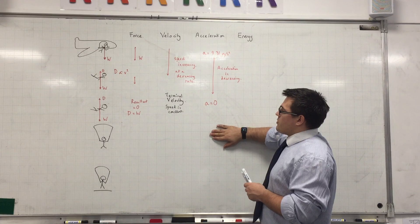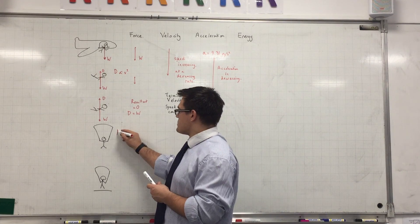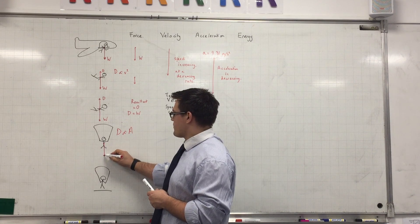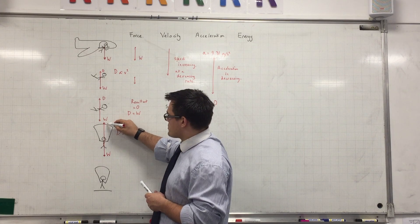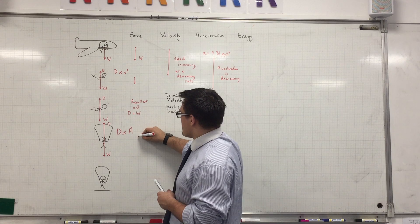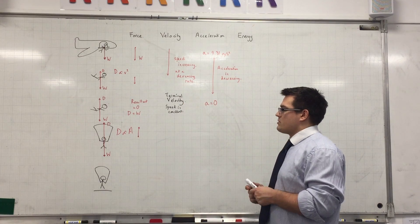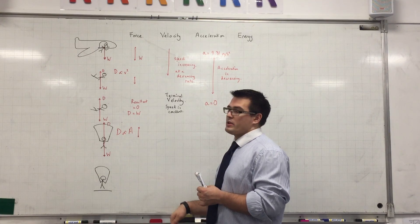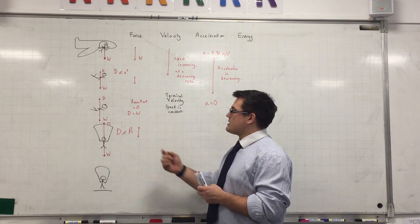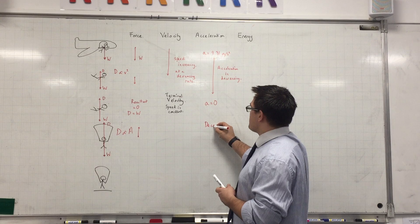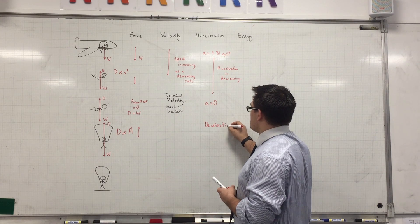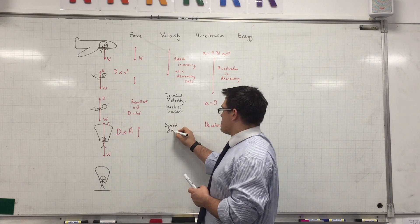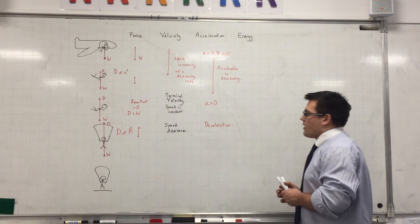When we get to the next stage, we're exploiting the fact that drag is also directly proportional to area. When we open our parachute, our weight is still exactly the same, but we massively increase our drag force. So the resultant force at this stage is now upwards as a result of the increase in drag. To be clear, this does not mean the skydiver moves upwards — they are still falling downwards. The upward resultant force means they are going to decelerate — their speed is going to slow down.